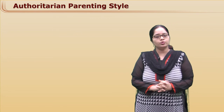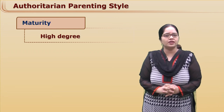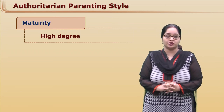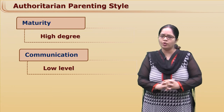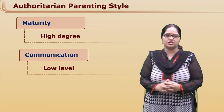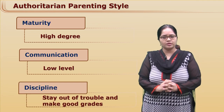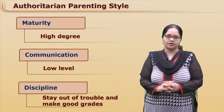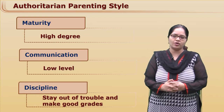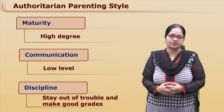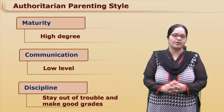So now let's see what such authoritarian parents expect from their child. When it comes to maturity, they want their kids to be highly mature — they want them to behave like adults. When it comes to communication, it's very low; they don't interact with their children, but they want the child to understand everything they want them to do. Regarding discipline, they are very strict. Such children are always worried about their parents, so they try to remain out of trouble, but they are academically very good because they are constantly pressurized by their parents to perform well.